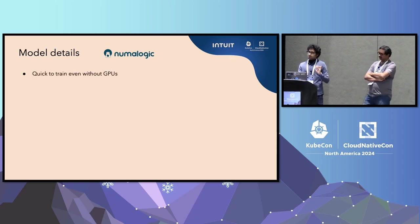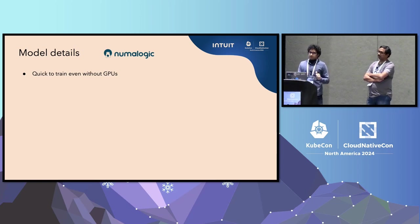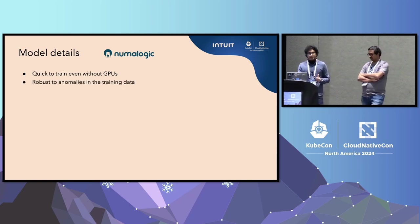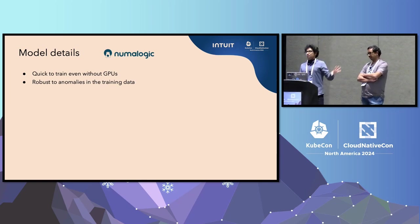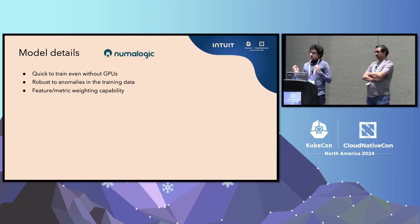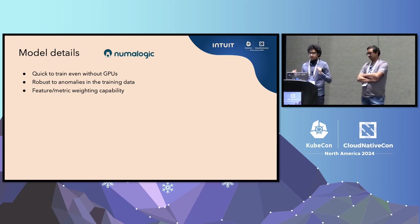Now a little bit about the model details. All of these models are available in PneumoLogic, which is open source. These models are quick to train even without GPUs — that was one of the fundamental things we wanted to achieve. The models are robust to anomalies in the training data, since the training data is not perfect and we have no labels to remove those anomalies. You also have a mechanism to weight features — for example, latency at 40%, error rate at 40%, and CPU and memory at 10% each, or you could keep them all even.